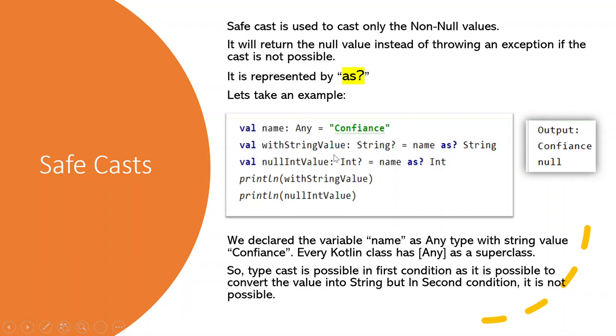Let's have an example when name of type Any class is equal to Contents. Any is the super class of every Kotlin class. So if it type casts the value of name to String with the safe cast, it will print the value as Contents. But if you try to cast it into Integer, it will return null as this cast is not possible in Kotlin compiler.